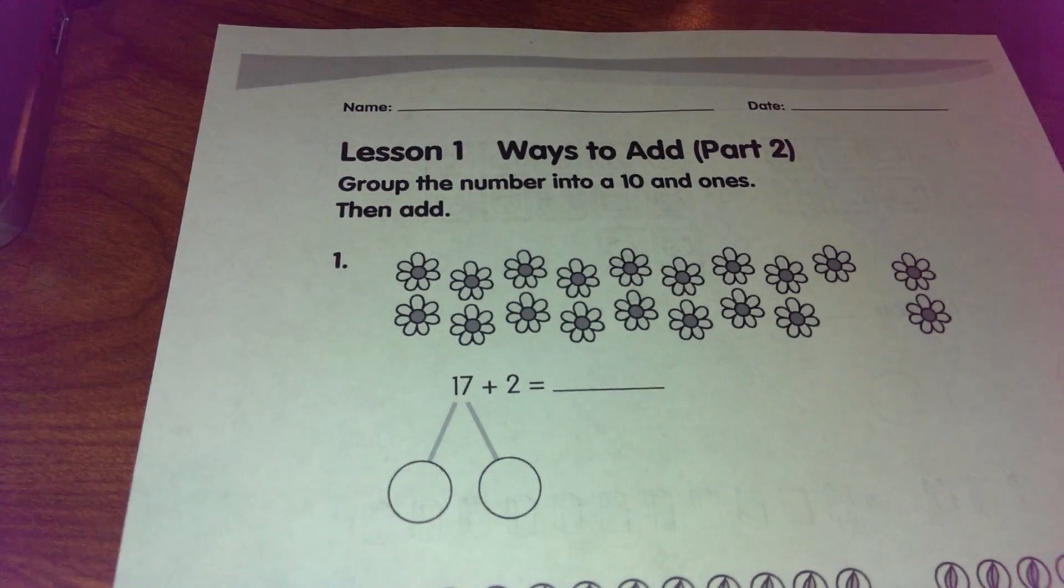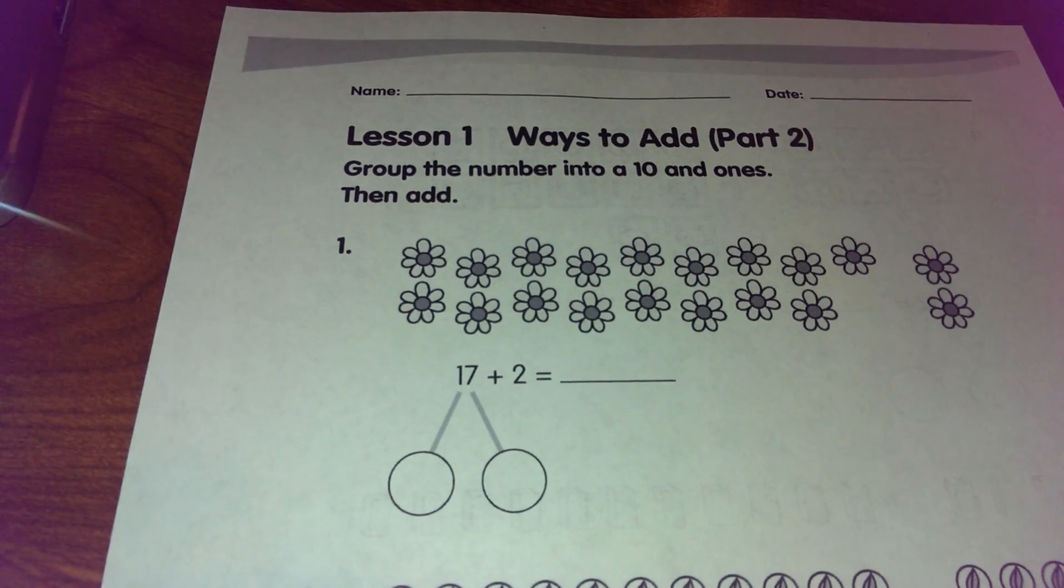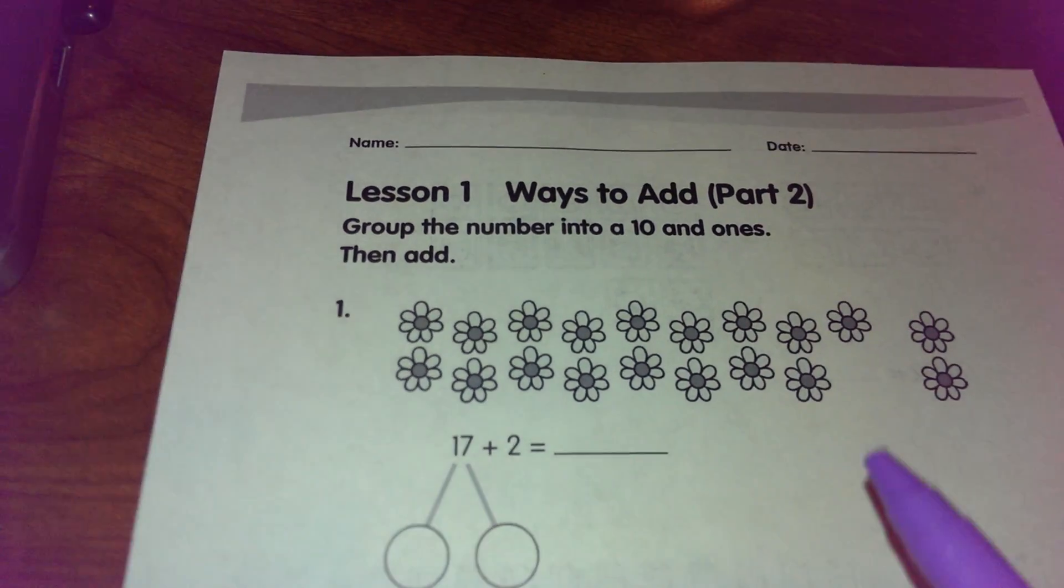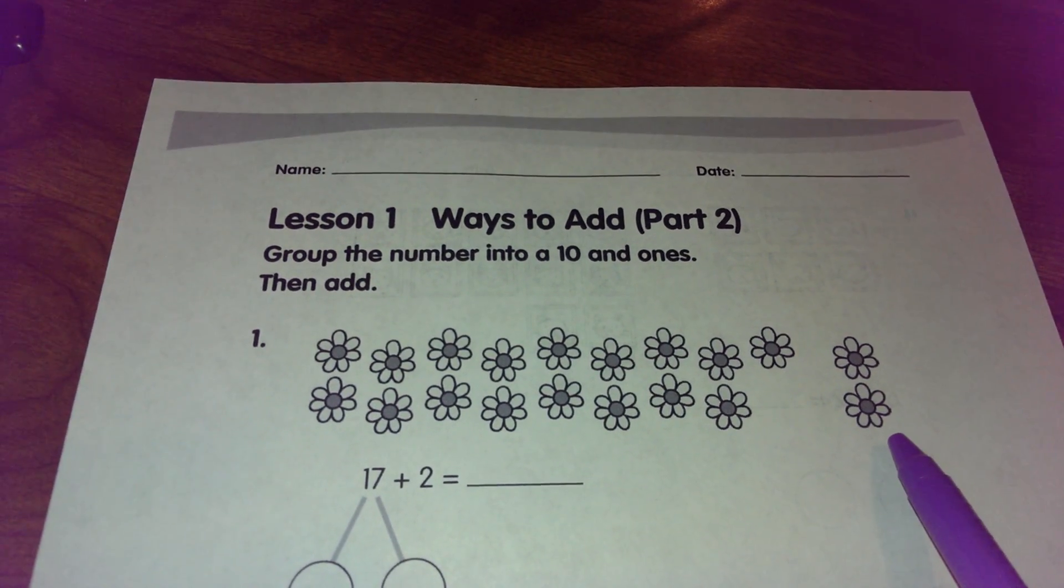When you look at the first problem here it says 17 plus 2. In the picture I can tell that there are 17 flowers here and two flowers over here.